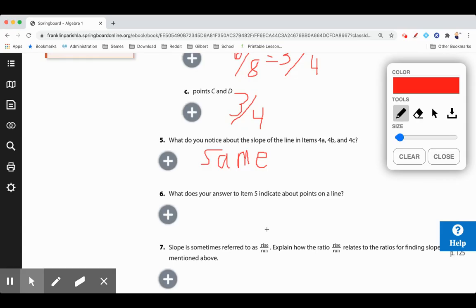What does your answer to item 5 indicate about the points on the line? All points have the same slope between them. It's what I would say for number 5. All points have the same slope between them.